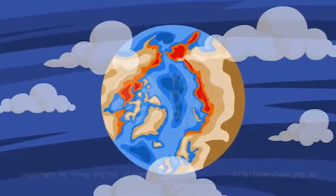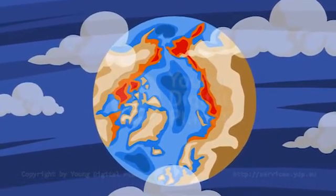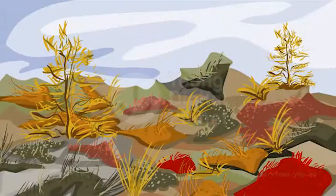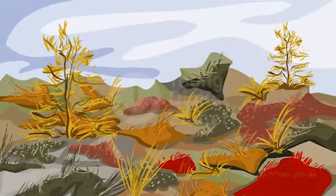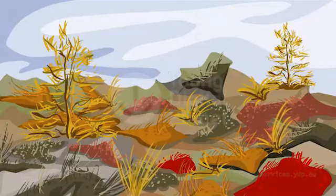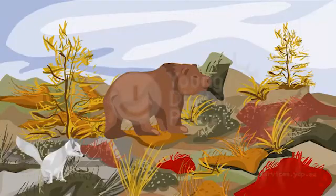Have you ever heard of tundras? Tundras are the coldest ecosystems. For most of the year the ground is frozen. Plants such as mosses and lichens appear here only in the summer when the upper layer of the ground thaws. Tundras are inhabited by bears, arctic foxes and reindeers.